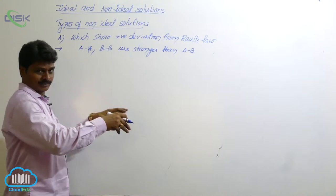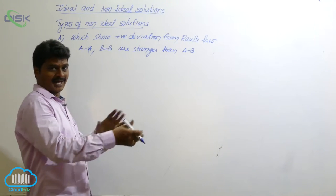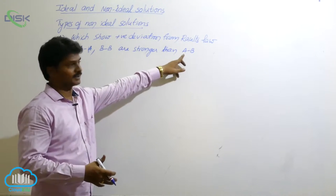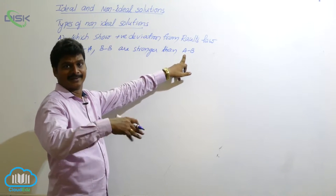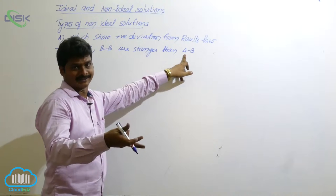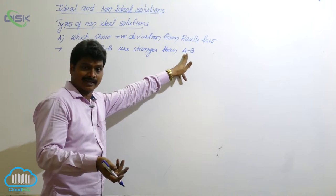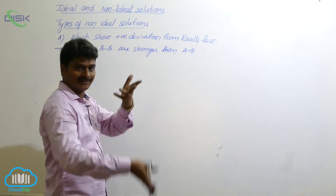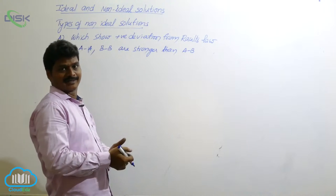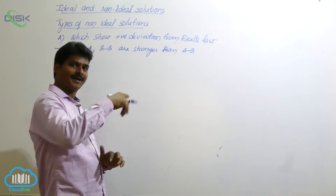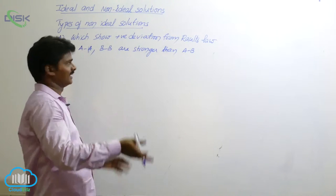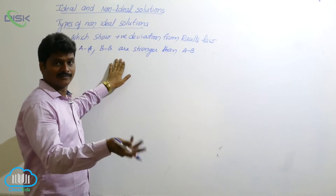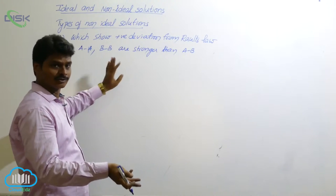When both A and B are mixed, what happens? There are weak forces between A and B. Because of these weak forces, both liquids can escape easily from the liquid mixture, giving more vapor pressure. That is why these solutions show positive deviation from Raoult's law.